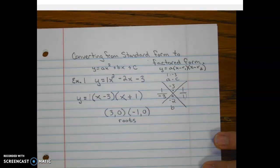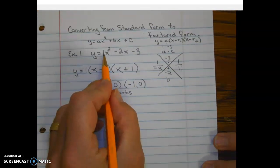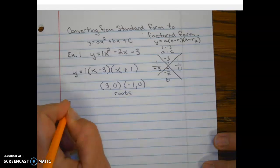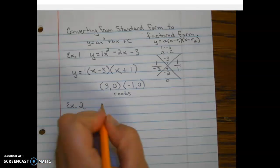Okay, let's look at another example. So this one had an A value of 1. Well, what happens if our A value is some other number besides 1? So let's take a look at this example.